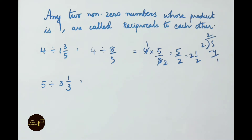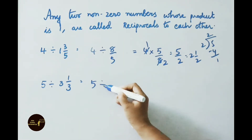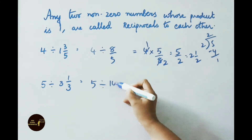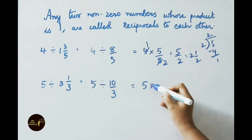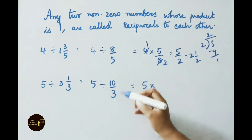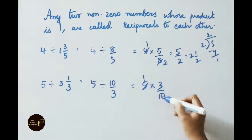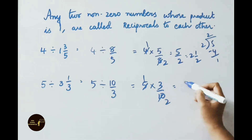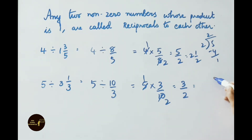See the next sum: 5 divided by 3 and 1/3. Write down 5 divided by — 3 × 3 = 9, 9 + 1 = 10 — write down 10/3. Now write down 5 × reciprocal of 10/3, which is 3/10. 5 and 10 simplify: 1/2. So write down 1 × 3 = 3, denominator 2. Answer is 3/2.